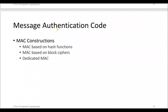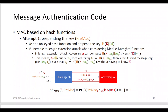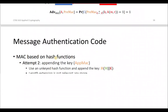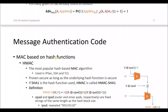Today I will explain MAC constructions. The first is the MAC based on hash functions and the MAC based on block ciphers. I will not discuss the dedicated MAC, just the first two. For the MAC based on hash functions, we have two attempts: the Pre-MAC and the App-MAC, and also a third type: the HMAC.